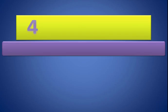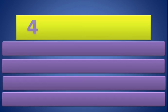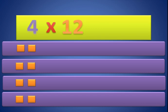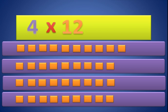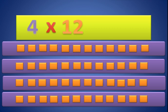Now let's go to 4 times 12. We need 4 groups — 1, 2, 3, and 4. We need 12 in each group — 1, 2, 3, 4, 5, 6, 7, 8, 9, 10, 11, and 12. So 4 times 12 equals 48.